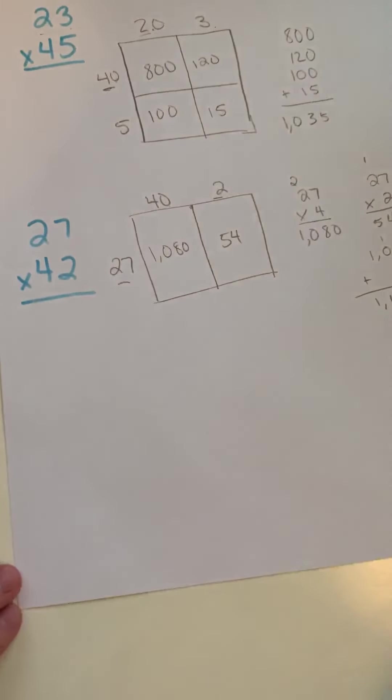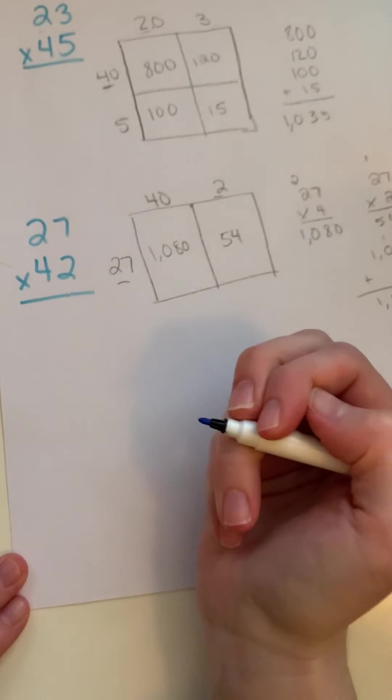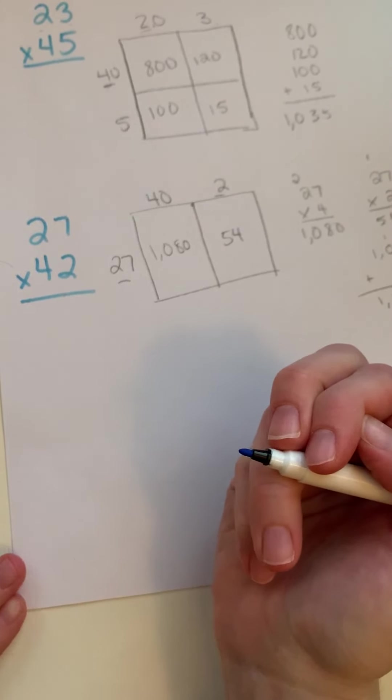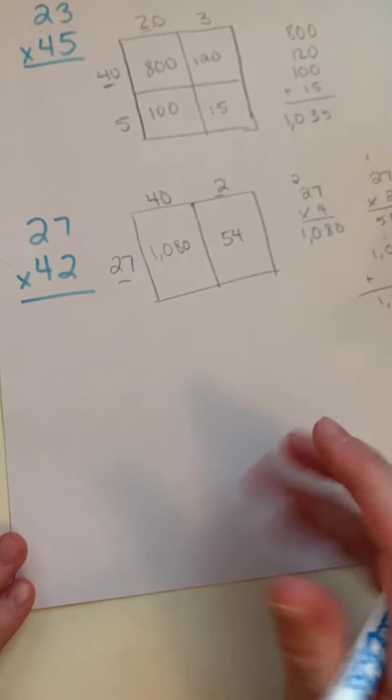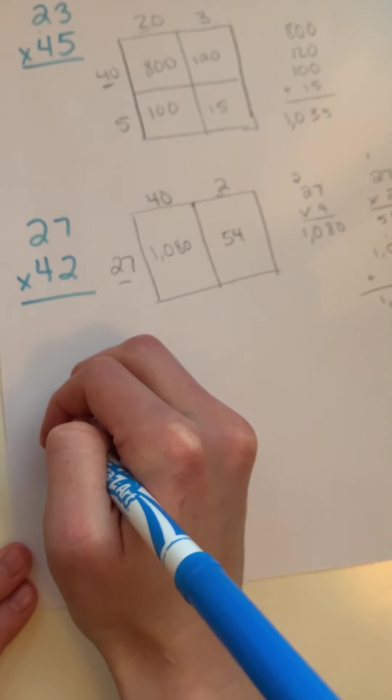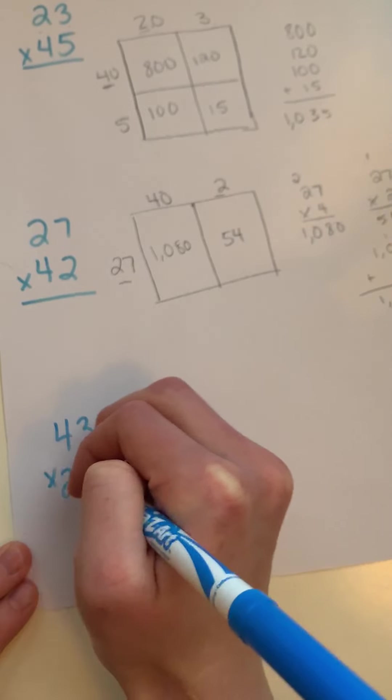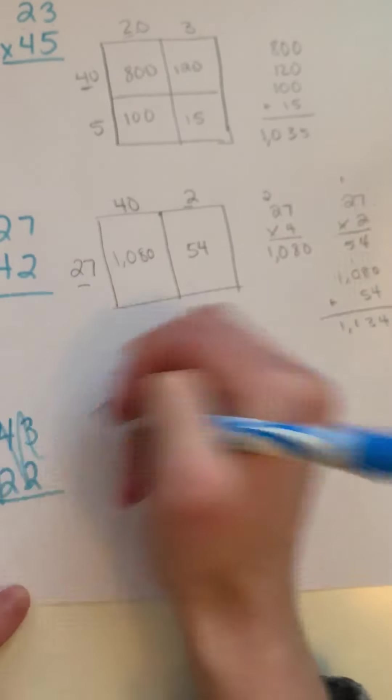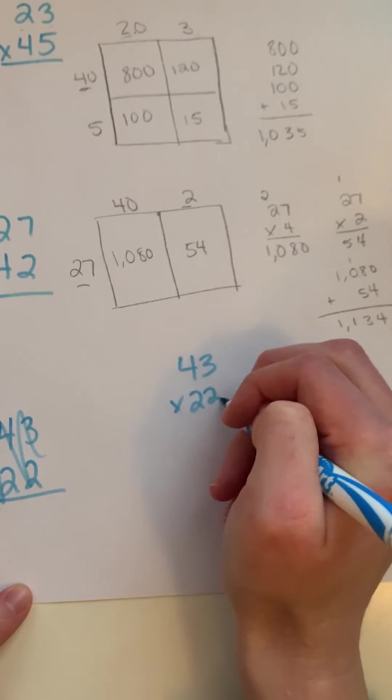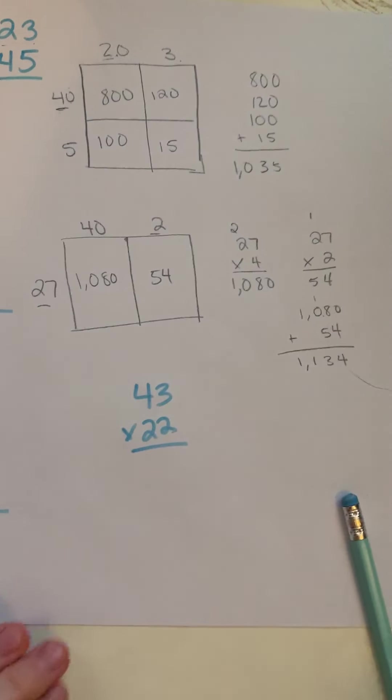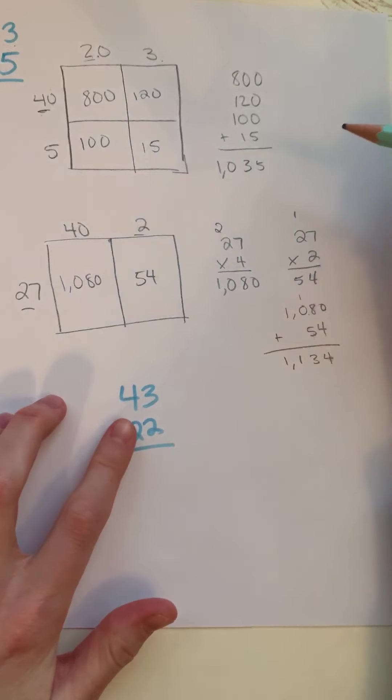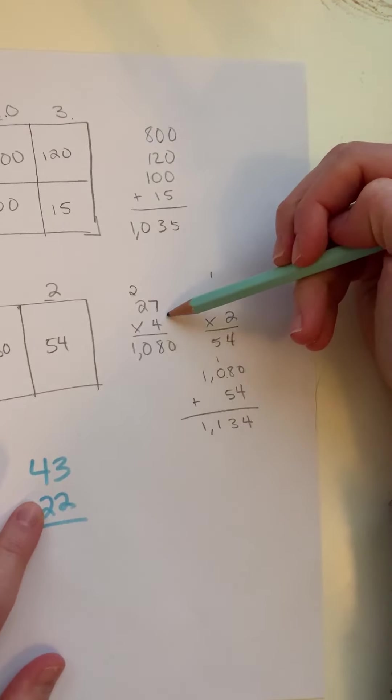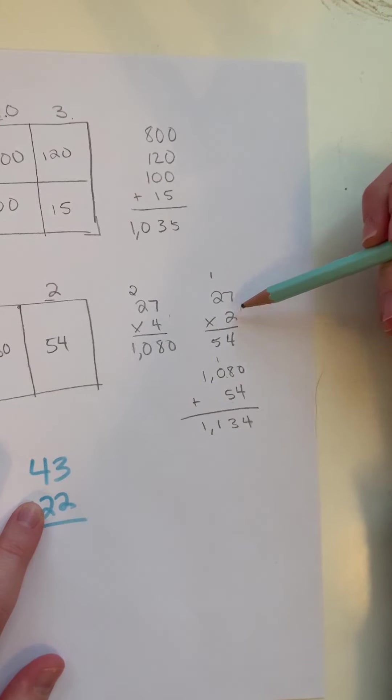Now the last method I want to show you is one that Zern has not shown you. But I do want to show it to you because I think it is a useful method. But if you don't like it, you can, of course, use one of these. So let's do 43 times 22. This method is very similar to the traditional algorithm that I used here and here to solve these problems.